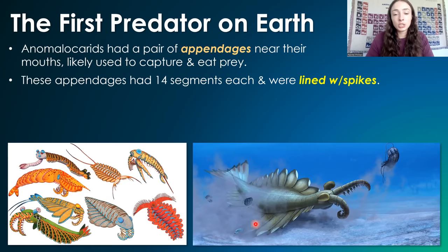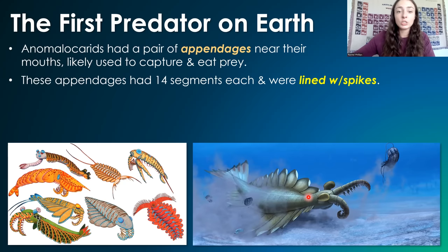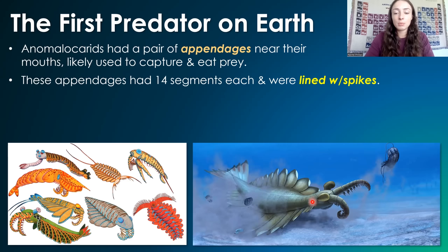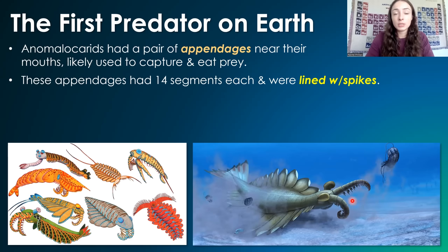Most of the depictions of anomalocaridids show one genus, which is called Anomalocaris. So if you see the term Anomalocaris, it's probably referring to this typical depiction of anomalocaridids. But there was a lot of morphological diversity as well.